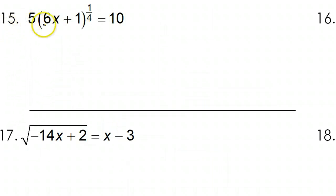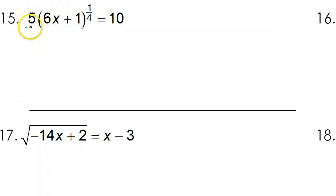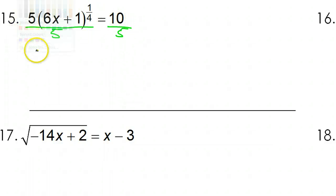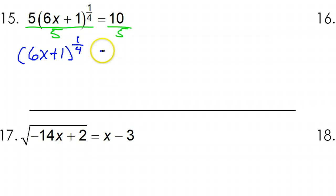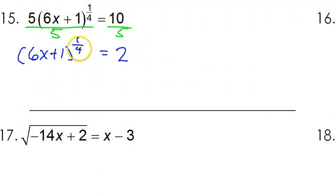Number 15. Please do not try to distribute this 5 — you can't do that because of the exponent right there. Instead, you need to first divide both sides by 5 to get rid of that 5. So that is going to give us 6x plus 1 to the 1/4 power is equal to 2. Now we will do the reciprocal power to get rid of this exponent. So 1/4 reciprocal is 4, so we will raise both sides to the 4th power.